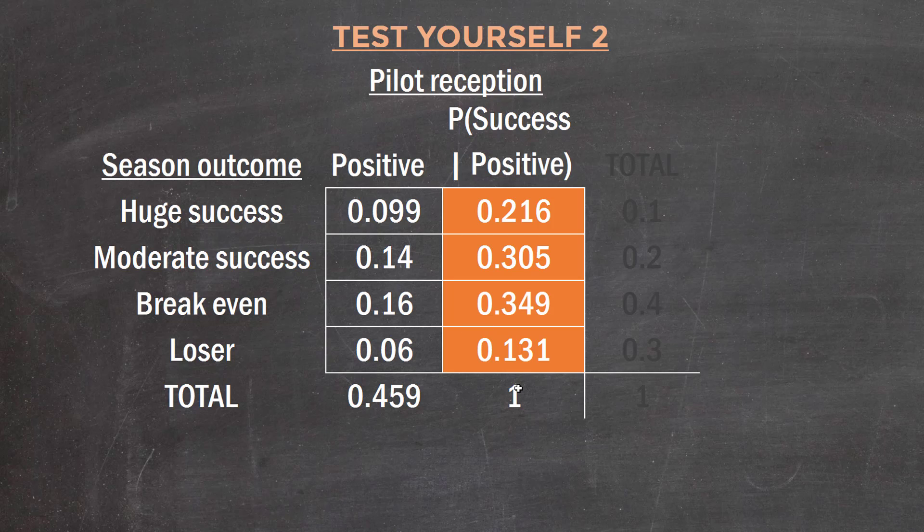So what this means is that if the pilot was received well, these are our new probabilities of the first season being successful. Before we knew how the pilot was received, these were the probabilities of the show being successful. But now it's this. So you can see that we've got a higher probability of it being successful if we know that the pilot was received well.